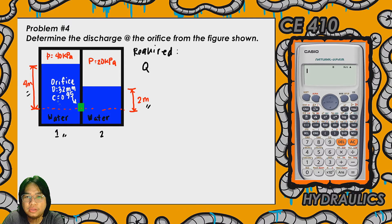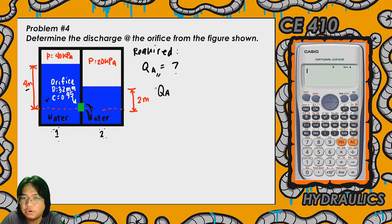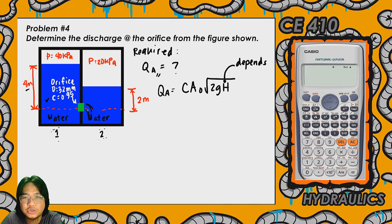Now, what we need to solve is the discharge. Since C or the coefficient of discharge is given, we can compute for the actual discharge. Let's compute for Q sub a or the actual discharge at the orifice. That's C times cross-sectional area of the orifice times the square root of 2g times uppercase H.